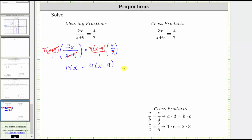And now we solve this equation. The first step will be to clear the parentheses by distributing four here, which gives us 14x equals 4x plus 36.